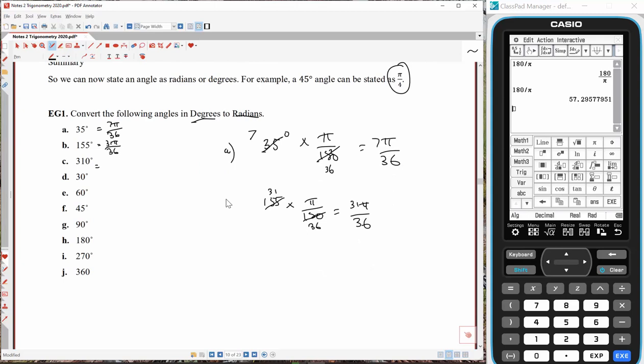So, this is A, B, C. So, we've got 310 multiplied by π on 180. How many times? Actually, let's do this one differently. Let's knock out that and that. 31 is prime. That's the best we're going to do. 31π over 18.